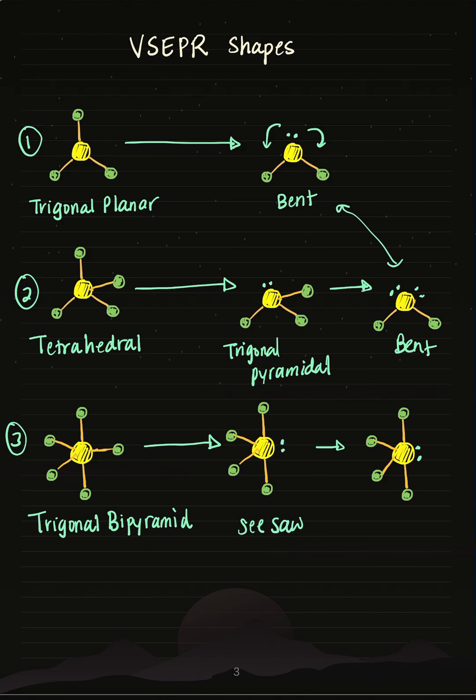Okay, so it looks kind of like the name of the shape. And if I take my seesaw and remove one more bond, and in its place I'm going to put a lone pair of electrons, this turns into a T-shaped molecule. Again, it kind of looks like its name.